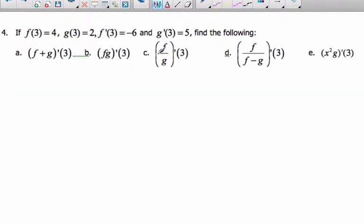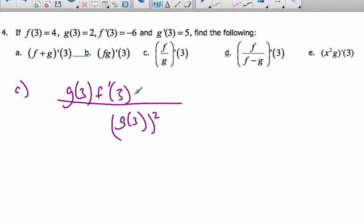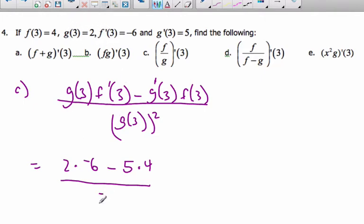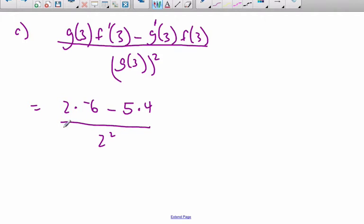Let's try c part now. Now I'm doing a quotient rule. So the quotient rule says, square the bottom, write it again, times the derivative of f minus the derivative of g times f of 3. Plug in the values. I know this is 2 times negative 6 minus 5 times 4 over 2 squared, which means I have negative 12 minus 20 is minus 32 over 4, which is negative 8.